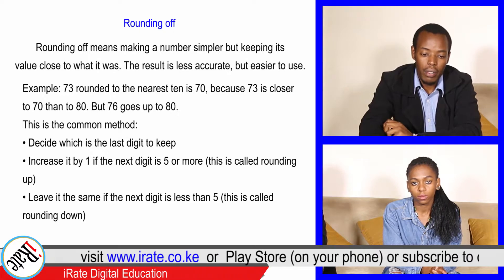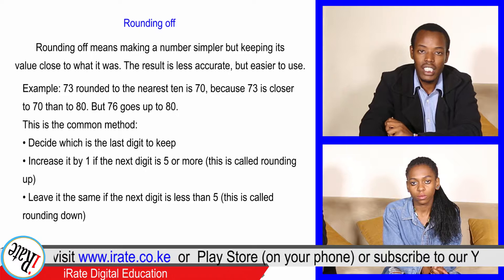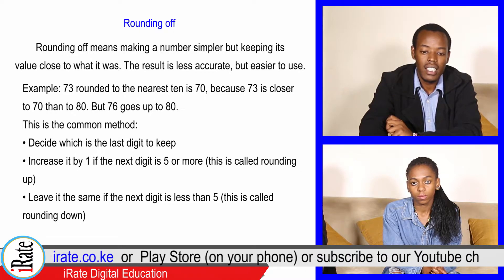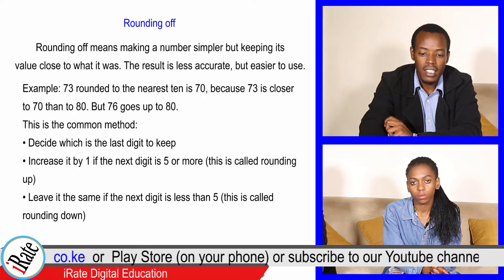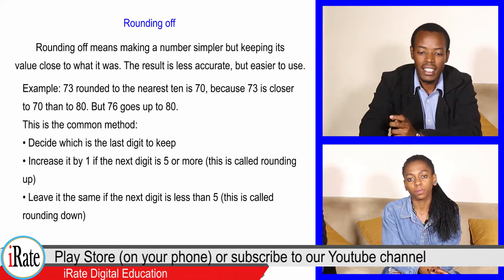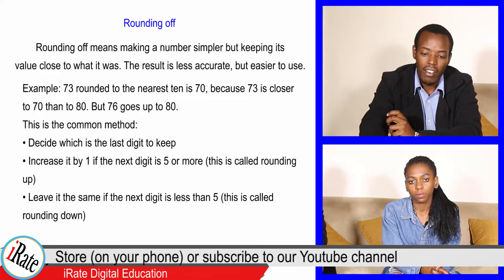This is the common method. Decide which is the last digit to keep. Increase it by one if the next digit is 5 or more—this is called rounding up. Leave it the same if the next digit is less than 5—this is called rounding down.